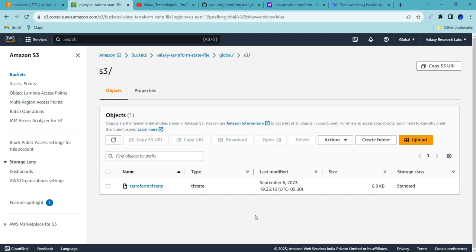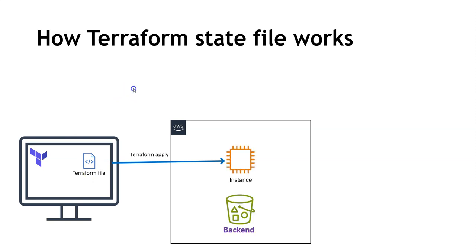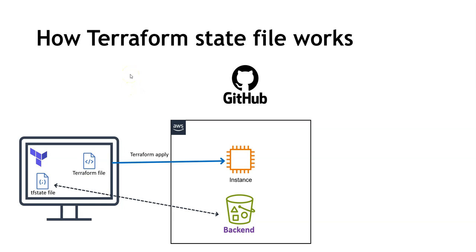Now let's talk about the problem statement. You have committed your Terraform state file here. Let's say you have colleagues who want to work on the same project. How will things happen in the real world? We have written a Terraform file on our local system and ran Terraform apply. It created an EC2 instance as well as an S3 bucket as a back-end, and also created a Terraform state file that we copied into the S3 bucket. Now, let's say your colleague also wants to work on the same project. Usually, what we do in the real world is share our Terraform files through a version control system like GitHub.